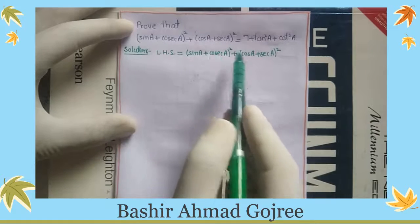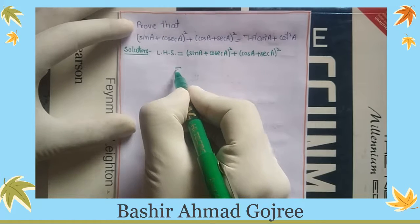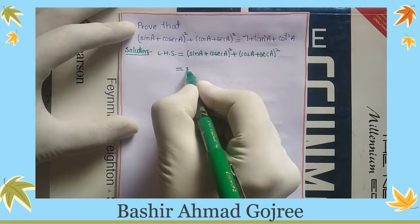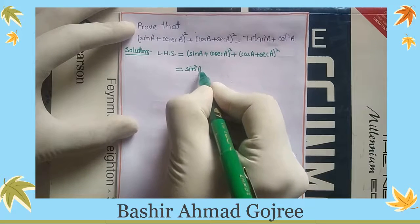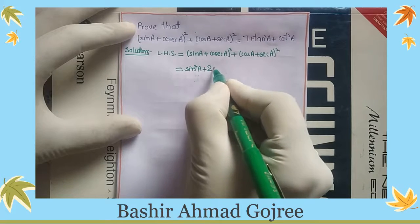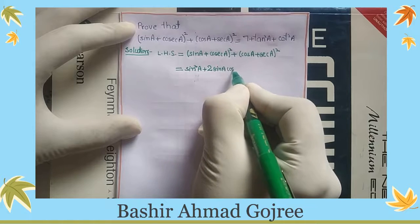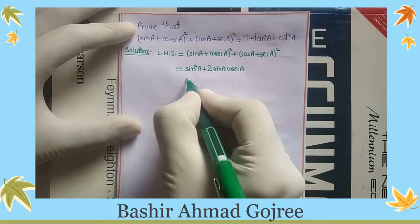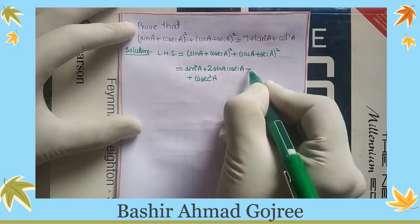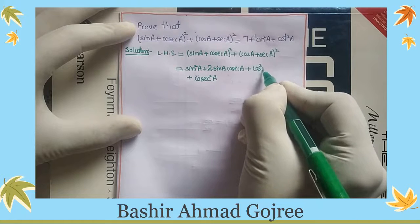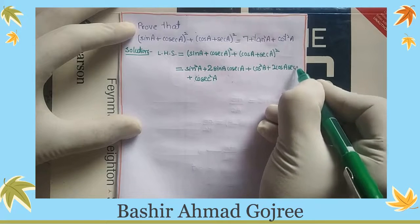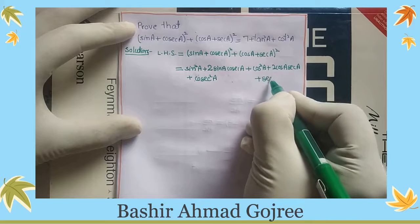In the solution we have first written the LHS directly. Here, sin A plus cos A — we will apply the (a + b) whole square formula. So, a² means sin square A, plus 2ab that means twice sin A cos A, plus b² that means cos square A. Then cos square A plus 2ab twice cos A sec A, plus b² that means sec square A.